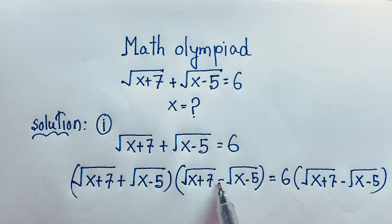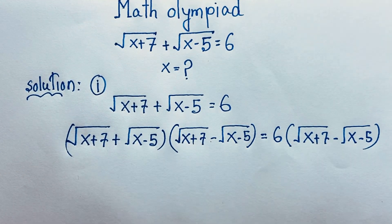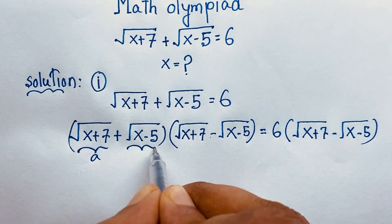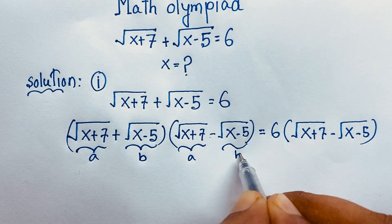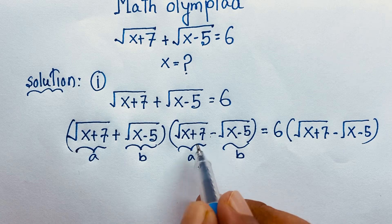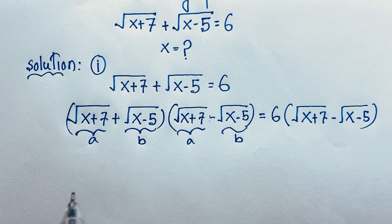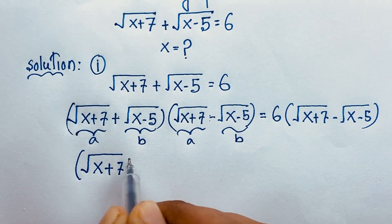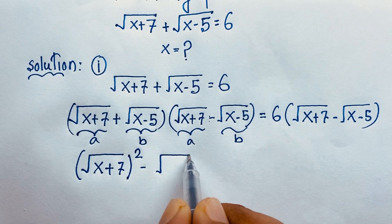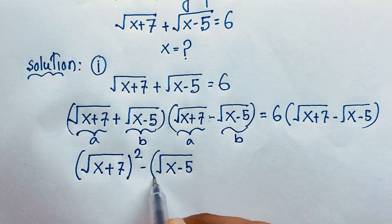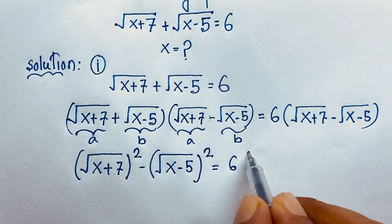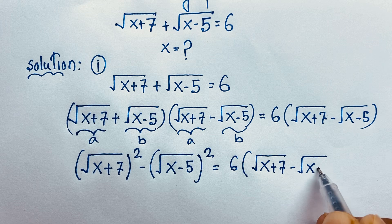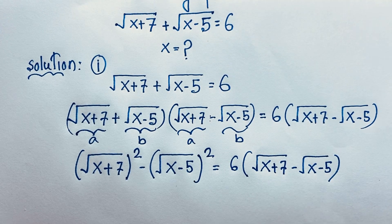I multiply both sides by this value, and these cancel out. If you think √(x+7) is a and √(x−5) is b, then a plus b times a minus b equals a squared minus b squared. Applying this formula: [√(x+7)]² minus [√(x−5)]² equals 6 times [√(x+7) minus √(x−5)], which gives x plus 7 minus (x minus 5) on the left side.